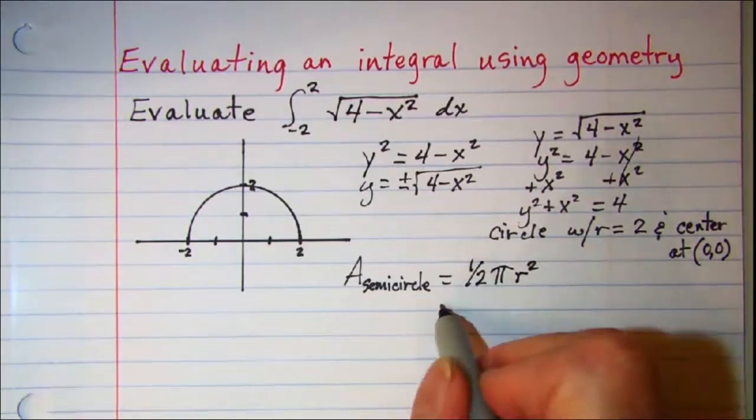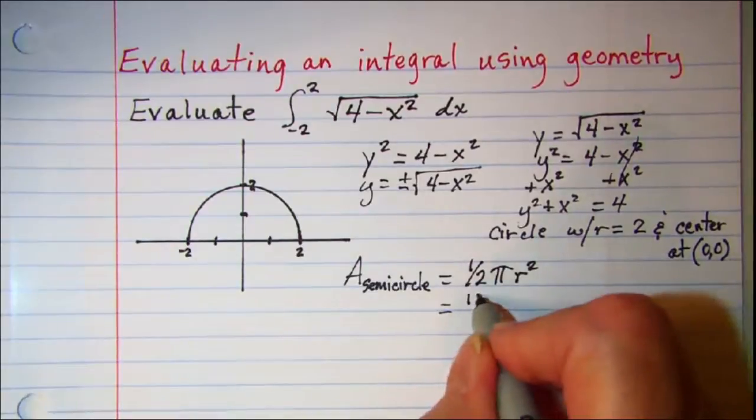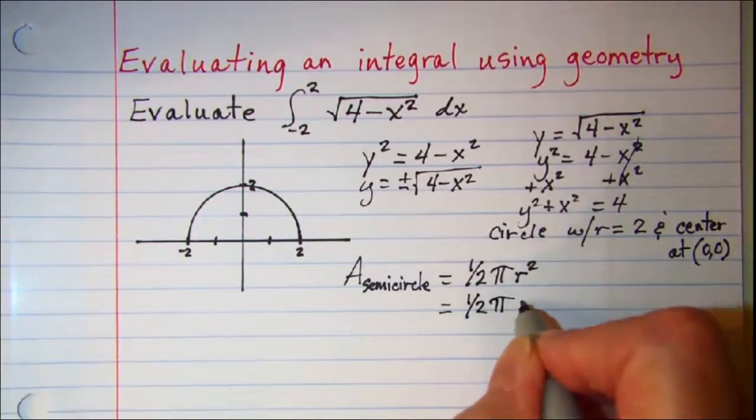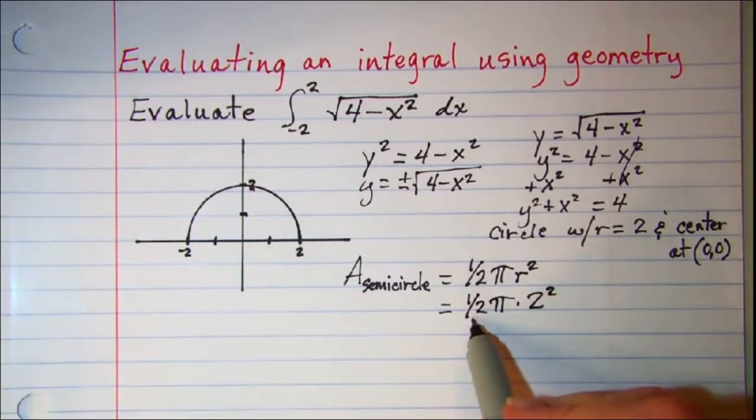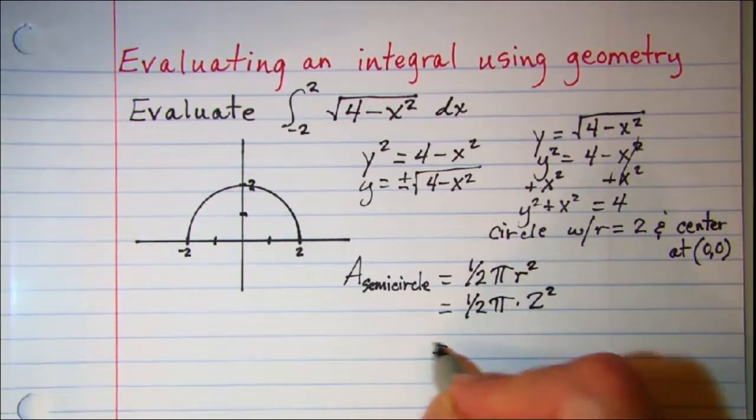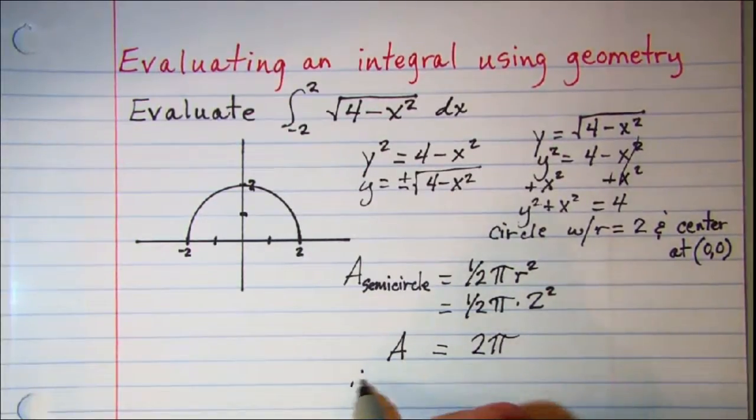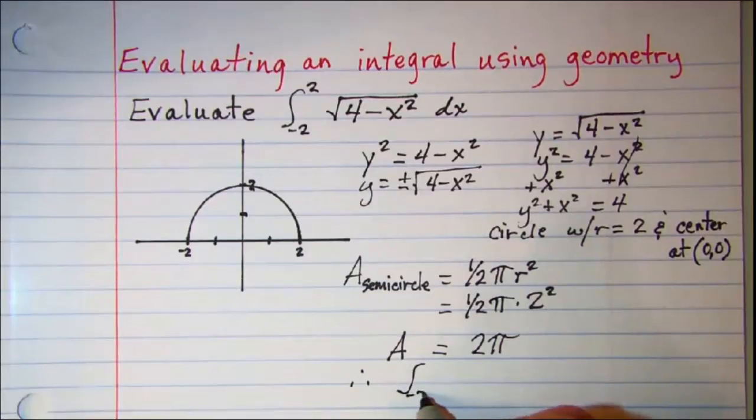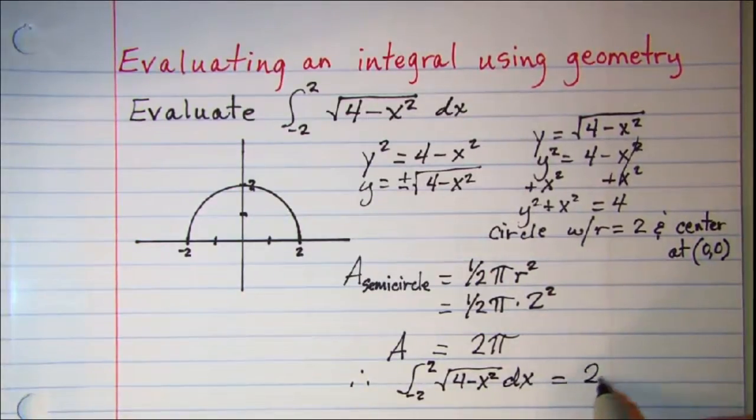And then we know our radius is 2, so we have one half pi times 2 squared. So my area is 2 pi, therefore my integral from negative 2 to 2 of this function is 2 pi.